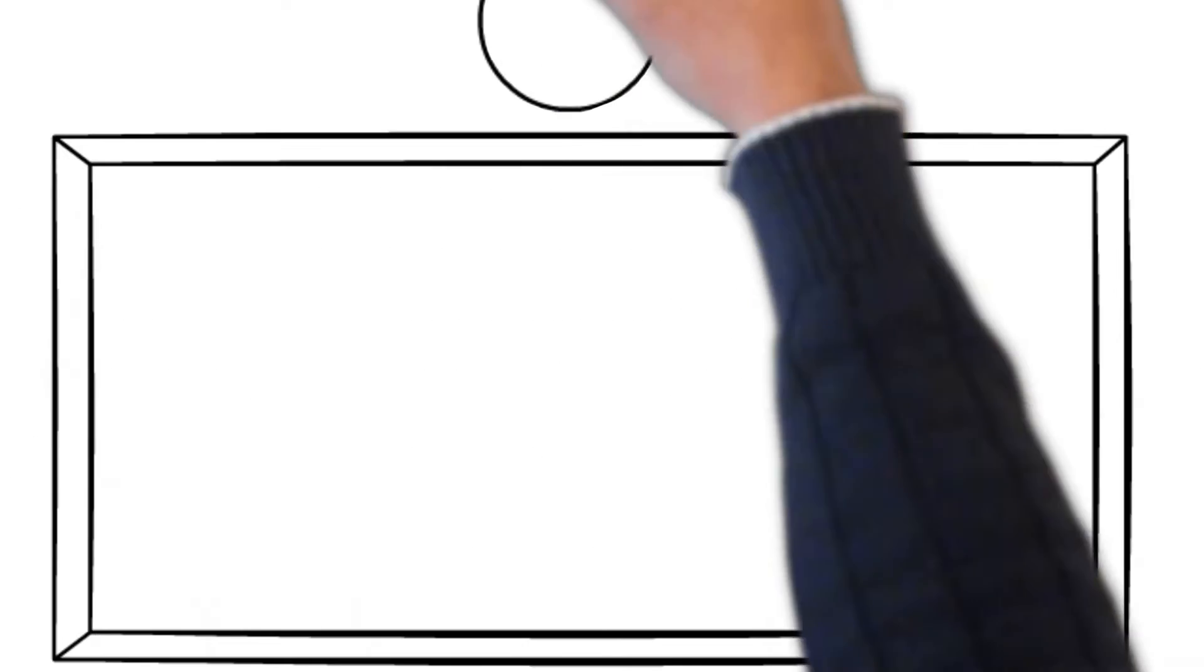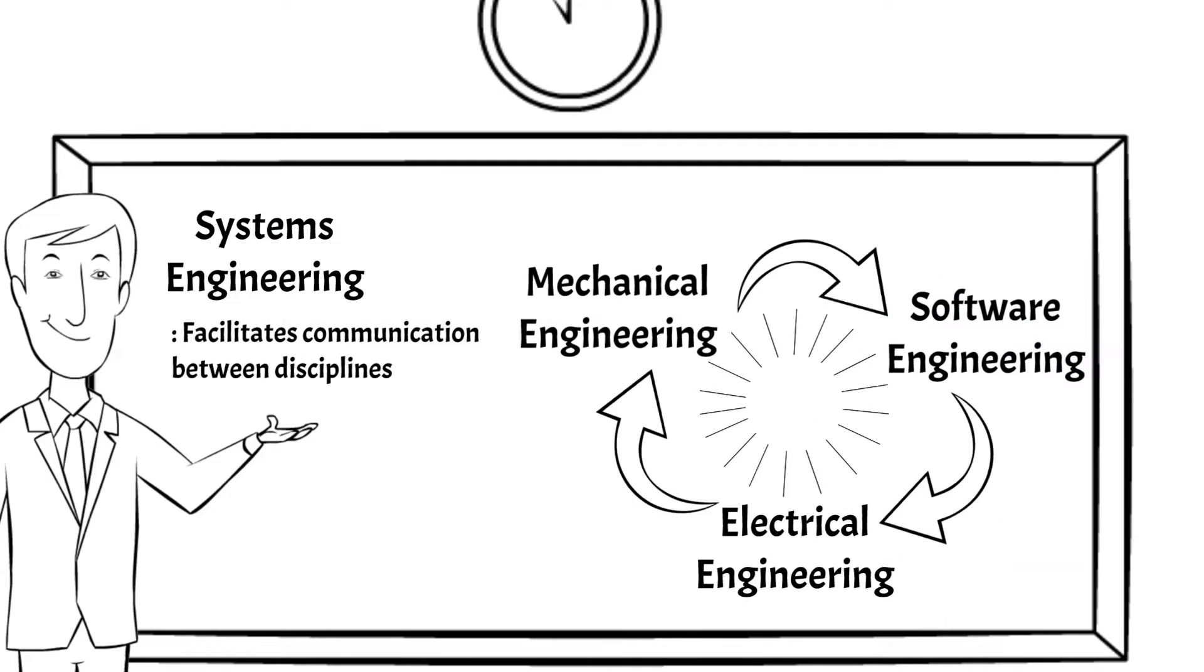Systems engineering's specialty is facilitating communication between the other engineering disciplines to identify gaps, risks, and opportunities earlier in the system design.